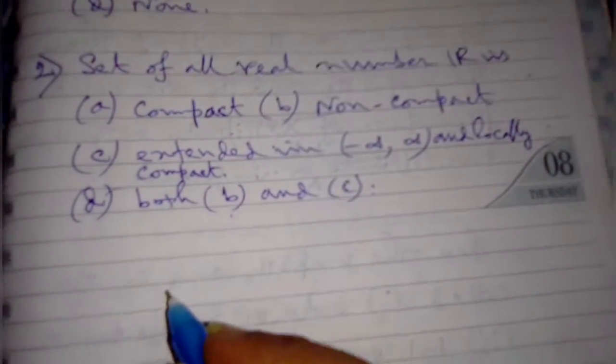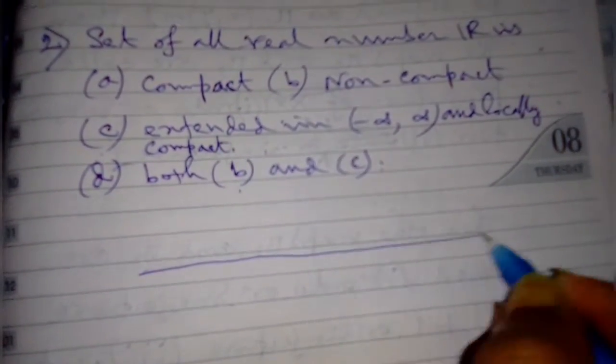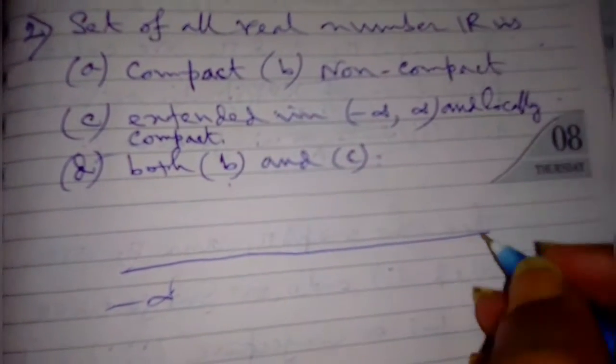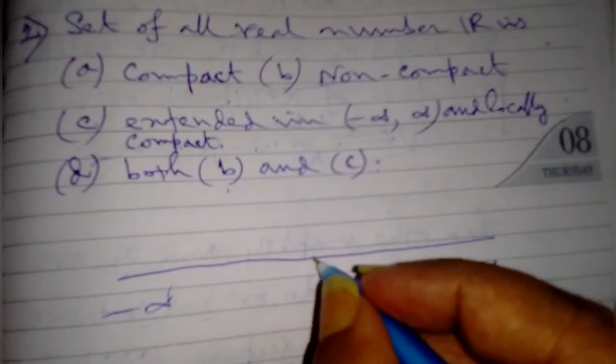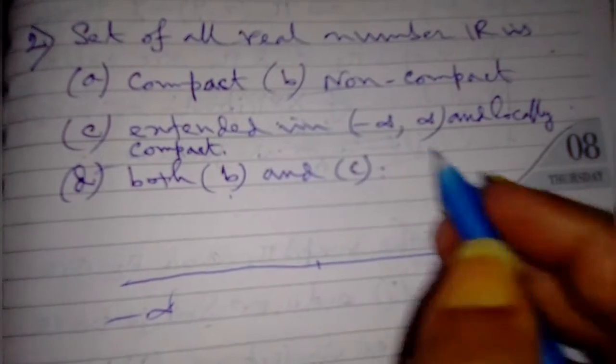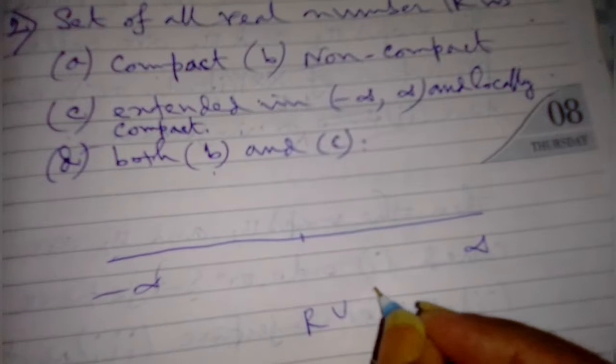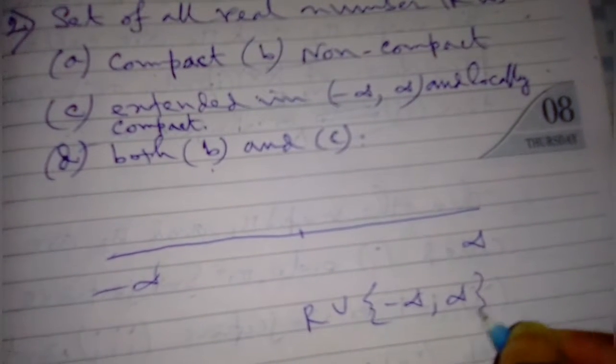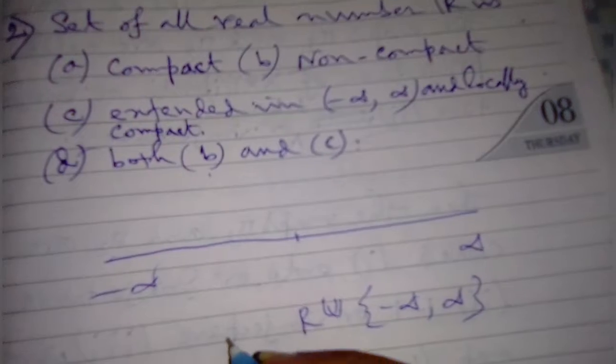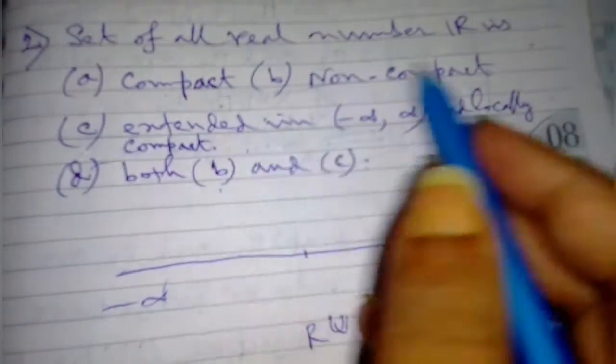So if we consider the real line, any real line, that is minus infinity to infinity. If we consider it, in this there is an extended system of R. Real line is extended system, that is a union of minus infinity to infinity. It is a real criteria if we consider.